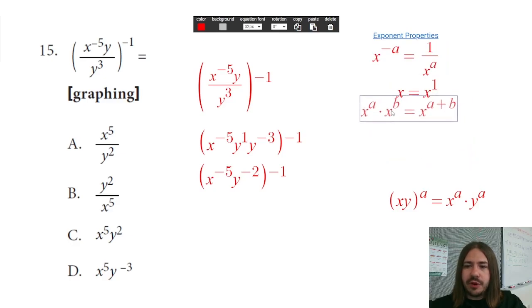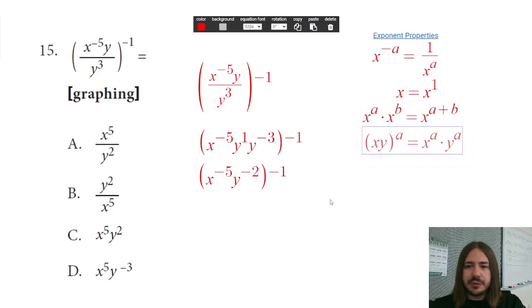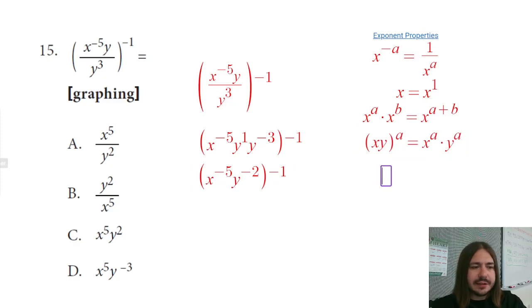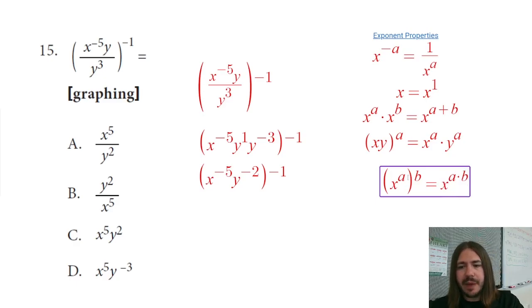So the next property we are going to use, and I think this may be the last one we really need to call out here, is whenever you raise a power to a power, so let's say we have something like x to the a, really don't want to put a number on here because I want to write it generally, and let's say I raise that to another power. The way you can combine these is through multiplication. So you just multiply the powers together, a times b. That way you get rid of this power to a power, and this is called the power of a power property.